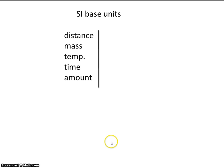So we have a certain way of measuring distance, mass, temperature, time, and amount. Distance is measured in meters. Mass is measured in kilograms. Temperature in Kelvin. Time in seconds. And amount in a unit called the mole.